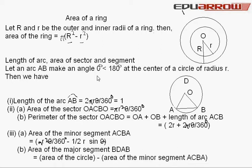The angle θ is less than 180 degrees at the center of a circle of radius r. Then we have length of an arc, the arc AB is equal to 2πrθ upon 360 degrees.